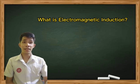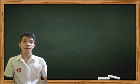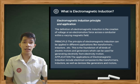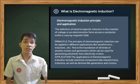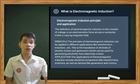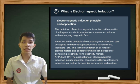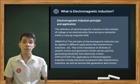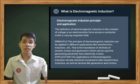What is electromagnetic induction — do you have any idea? Electromagnetic induction is the creation of voltage or an electromotive force across a conductor within a varying magnetic field. The principle of electromagnetic induction can be applied to different applications like transformers, inductors, etc.